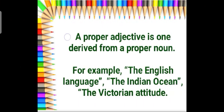The first one is proper adjective. The name itself tells us — proper. It is a particular adjective, the describing word we talk about. A proper adjective is one which is derived from a proper noun. A proper noun is a name of a particular person, place, animal, or thing. Few examples of proper adjectives are: the English language, the Indian Ocean, the Victorian attitude.